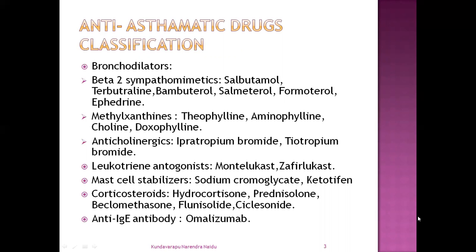Next, methylxanthines. The methylxanthines class of drugs are theophylline, aminophylline, choline theophyllinate, and doxofylline. And the next class, anticholinergics — the anticholinergic drugs are ipratropium bromide and tiotropium bromide. So these are the subclasses of drugs in bronchodilators: beta-2 sympathomimetics, methylxanthines, and anticholinergics.